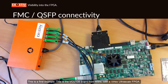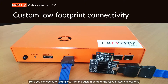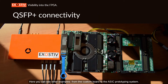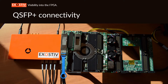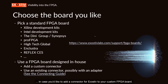This is the first example: a VCU-108 board from Xilinx with a Virtex UltraScale FPGA. It can be connected to the Exhaustive probe with either the QSFP+ cage or with one of the FMC connectors. You can also see other examples ranging from custom boards to ASIC prototyping systems. You'll find additional resources on our website, like a list of supported boards and a connecting guide in case you'd like to add a connector for Exhaustive to your custom FPGA board.